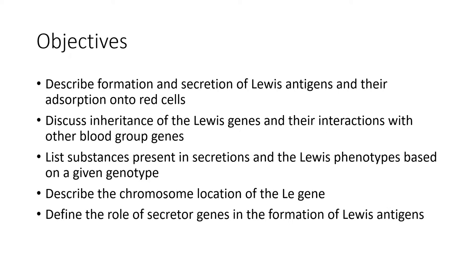You should be able to describe the formation and secretion of Lewis antigens and their absorption onto the red blood cells. Discuss inheritance of Lewis genes and their interactions with other blood group genes. List substances present in secretions and the Lewis phenotype based on a given genotype. Describe the chromosome location of the Lewis gene. Define the role of secretor genes in the formation of the Lewis antigens.